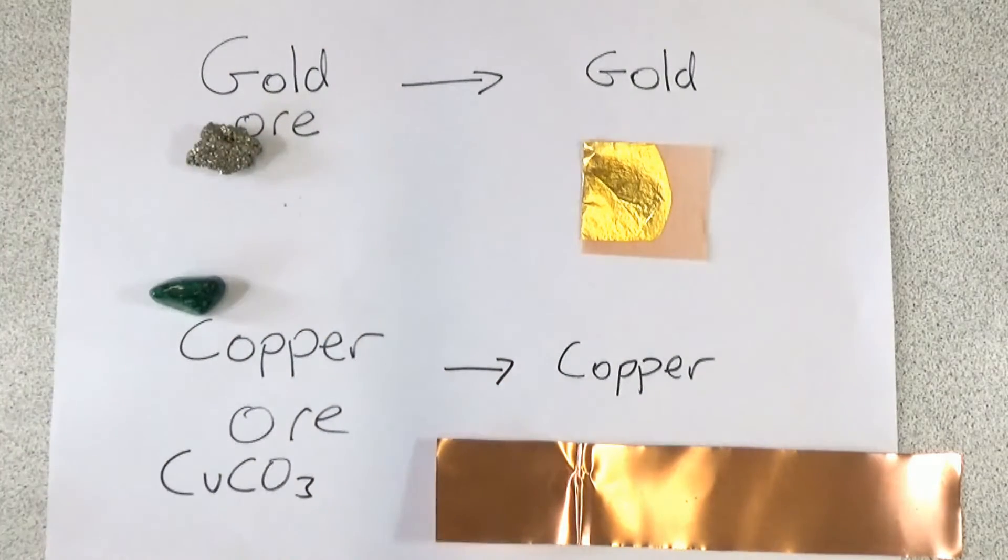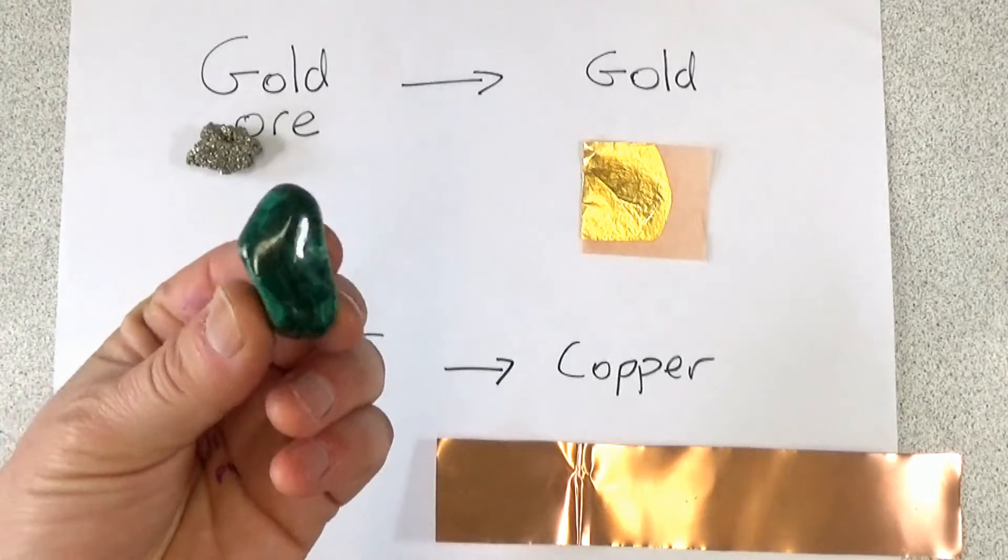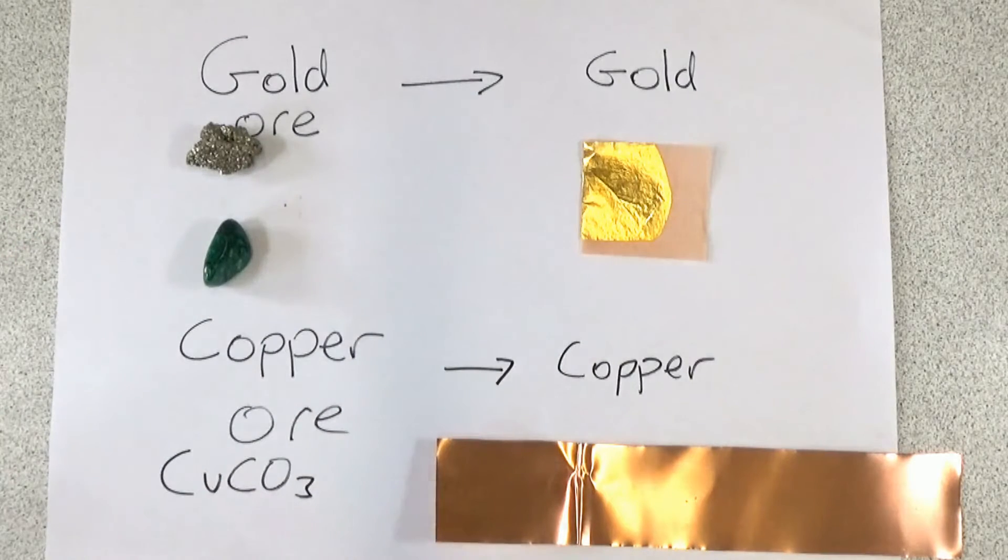Copper on the other hand is higher up the reactivity series so when it's in the rock it's going to start joining with other elements. So this ore which contains copper is actually copper carbonate. Copper joined to carbon and oxygen atoms so we need some way of chemically extracting the copper from the ore.